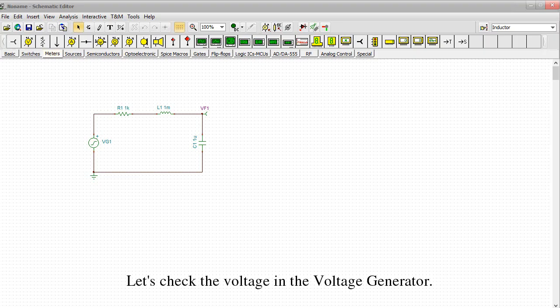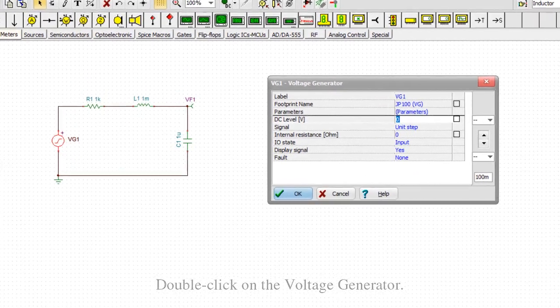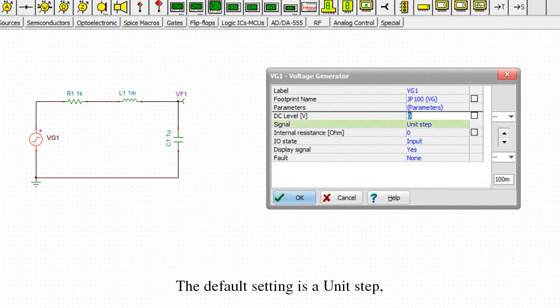Let's check the voltage in the voltage generator. Double-click on the voltage generator. The default setting is a unit step.